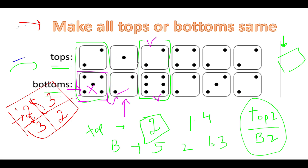Can we make all tops equal to 5? The top value here is 2 and the bottom is 5, so we can swap them — contributing 1 rotation. But at the next index, the top is 1 and the bottom is 2; there is no 5 across this entire domino. Making the top as 5 is not possible. As a result, you cannot make either all bottoms equal to 5 or all tops equal to 5 — this target value gets eliminated.